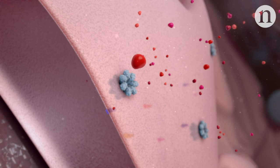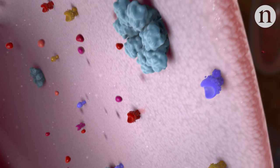Foreign peptides can only be spotted if they're displayed on the surface of a cell. The immune system uses major histocompatibility complex, or MHC molecules, to bind to the peptides and carry them to the cell's surface.